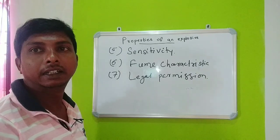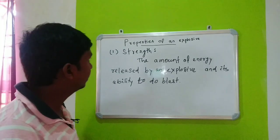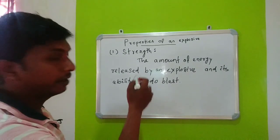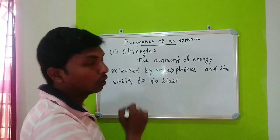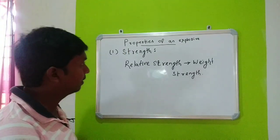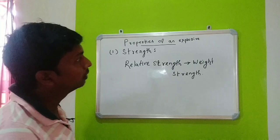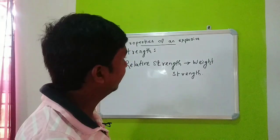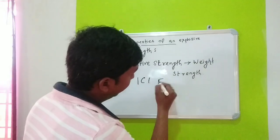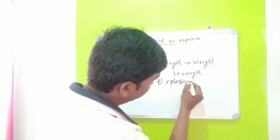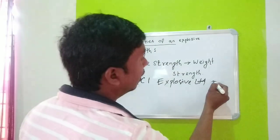So let's briefly start about strength. Strength means the amount of energy released by an explosive and its ability to do blast. The relative strength or power of an explosive is called weight strength, and the standard is defined by ICI — Imperial Chemical Industries Explosive Limited of India.